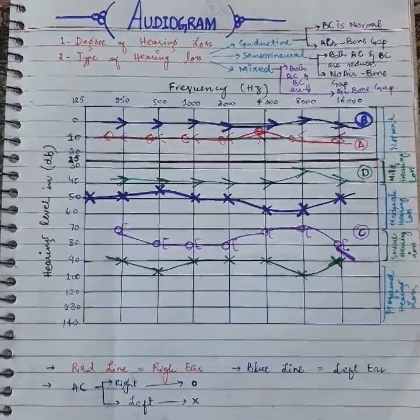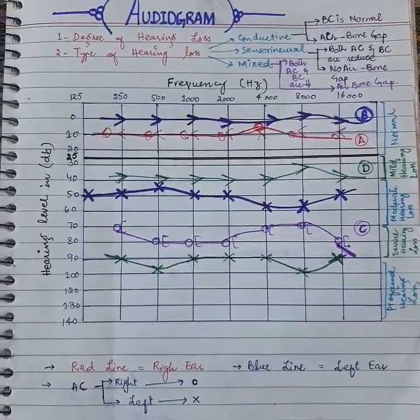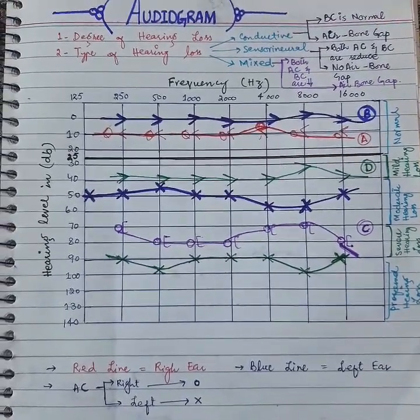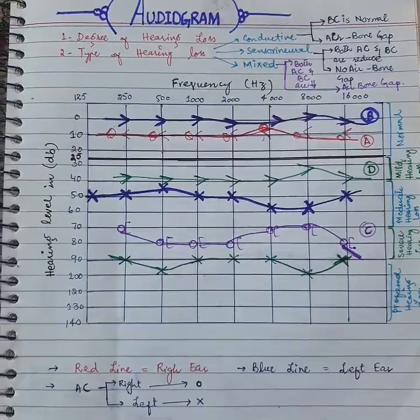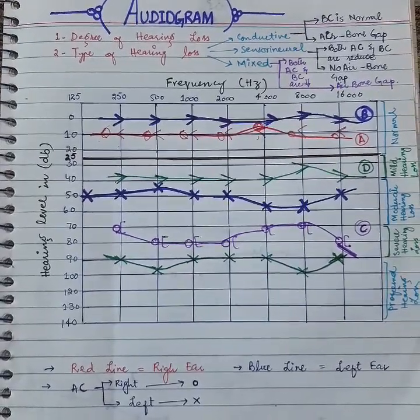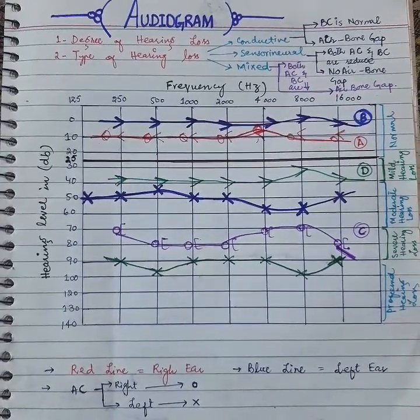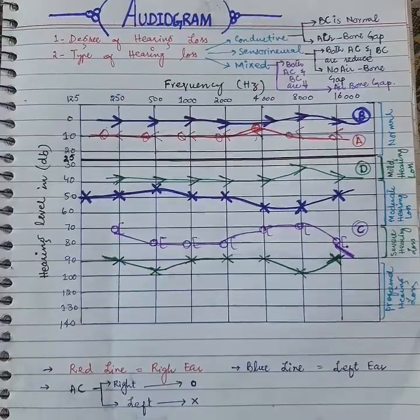In the previous video, we discussed some basics of the audiogram and how to assess the degree of hearing loss. In this video, we will discuss the type of hearing loss, which may be conductive, sensorineural, or mixed.